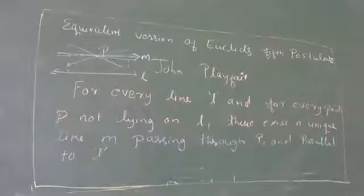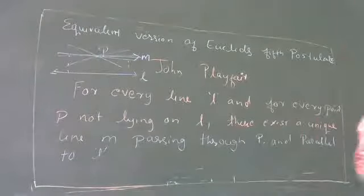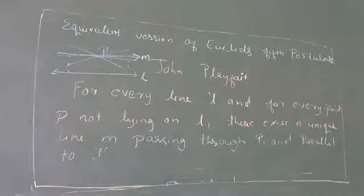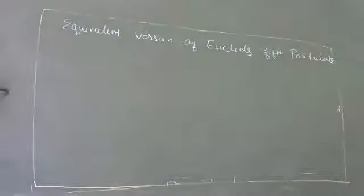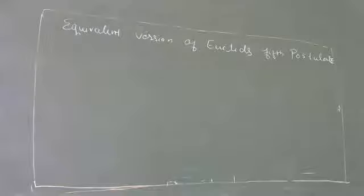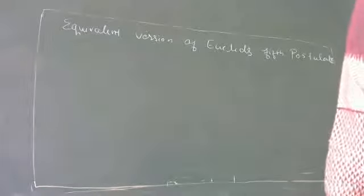Let us see example three, which is already given in the book. Consider the following statement: there exists a pair of straight lines that are everywhere equidistant from one another. Is this statement a direct consequence of Euclid's fifth postulate? We will now compare with Euclid's fifth postulate and Playfair's postulate to answer this question.